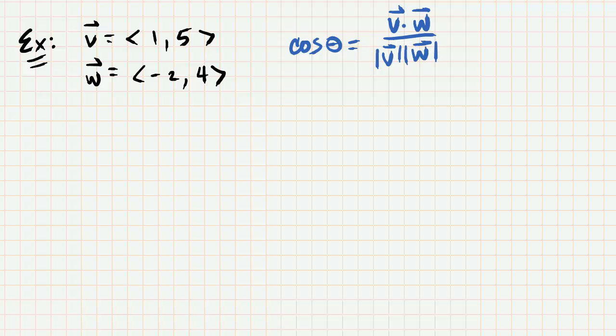So this formula says that the cosine of the angle in between the vectors will be the dot product divided by the product of the magnitudes.